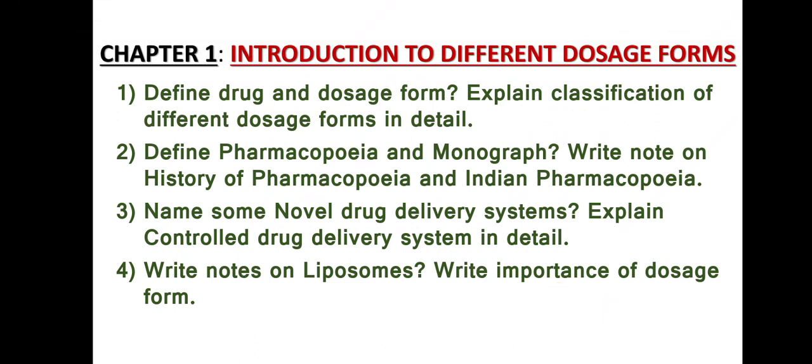Chapter one: Introduction to Different Dosage Forms. There are four important questions. Question one: Define drug and dosage form and explain the classification of different dosage forms in detail. Question two: Define pharmacopoeia and monograph, write a note on the history of pharmacopoeia and Indian pharmacopoeia.